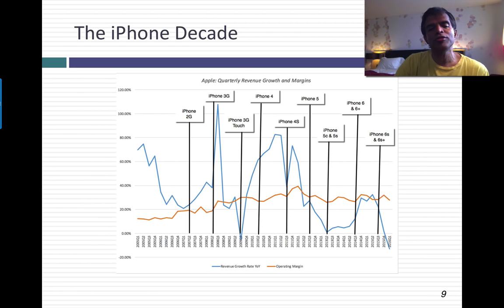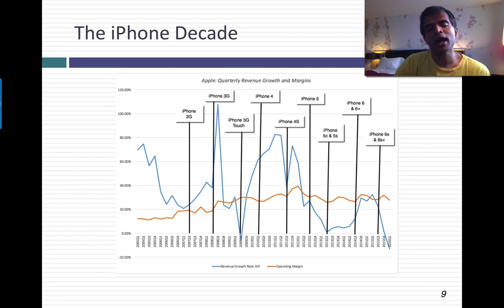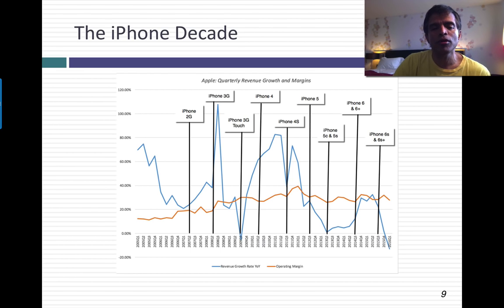I focused on the iPhone decade — the last decade — looking at revenue growth year-on-year and operating margin each quarter, with the iPhone model superimposed. Each iPhone, when introduced, pushes up revenue growth in the three or four quarters after, and then you see a pretty rapid drop-off. Apple is a company that increasingly has been hooked into the iPhone life-and-death sequence driving its revenue growth.